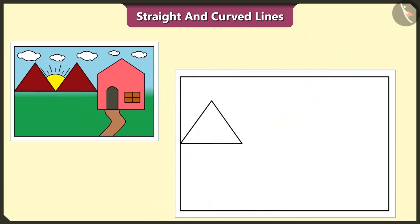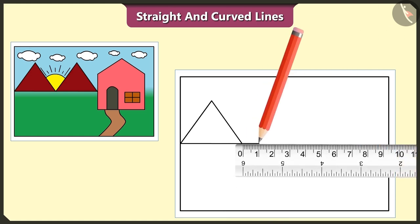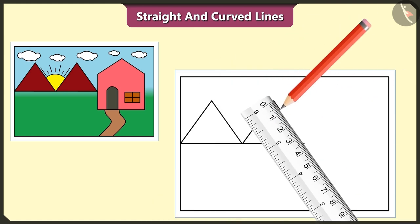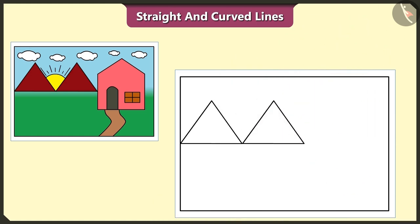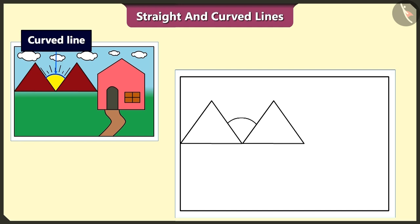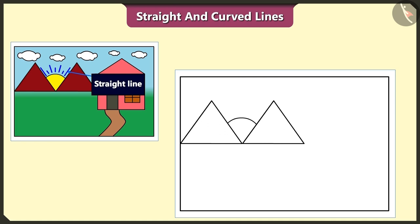And I made a similar hill beside it like this. Oh, wow! Let's draw one sun like this with the curved lines between these two hills made up of straight lines, and draw sun rays using straight lines like this.